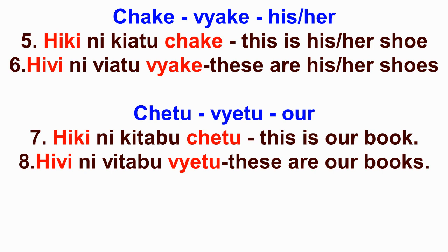First person plural: chetu and vyetu — means 'our.' Sentence seven: hiki nikitabu chetu — this is our book. If the books are many, we say: hivi niviatu vyetu — these are our books.